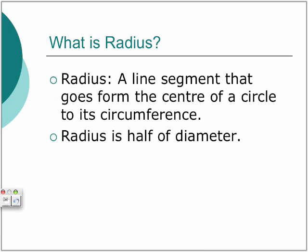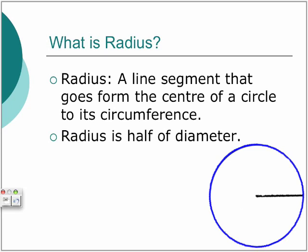Radius is a line segment that goes from the center of a circle to its circumference. Radius is half of the diameter — so radius is the same thing as diameter, but it's just half.